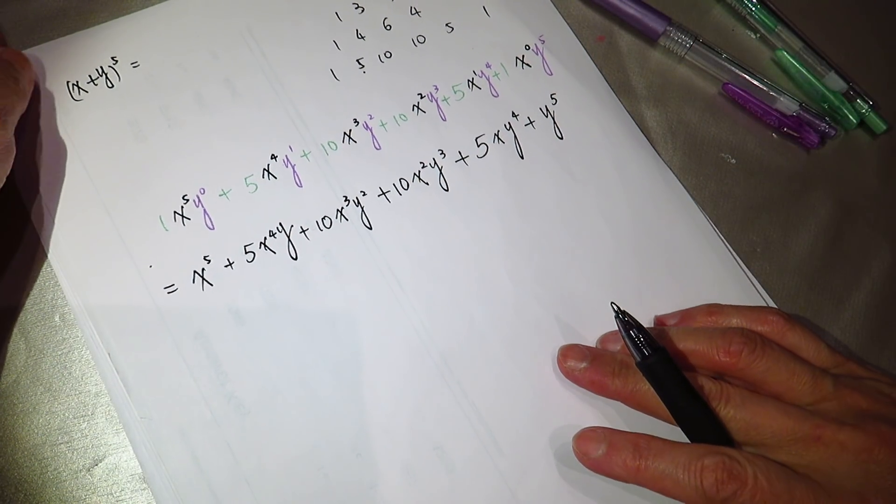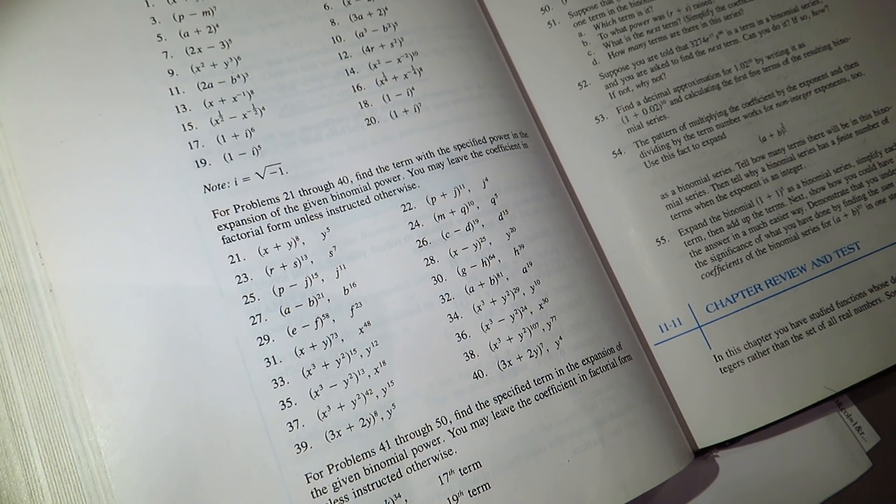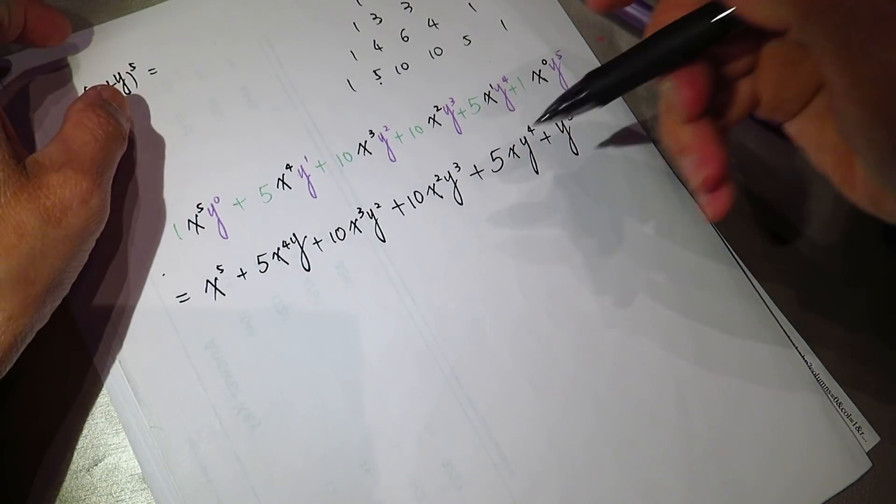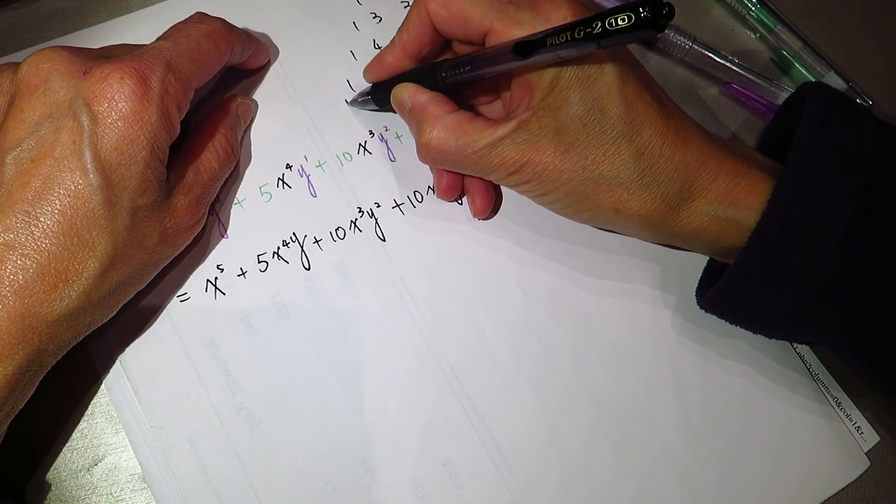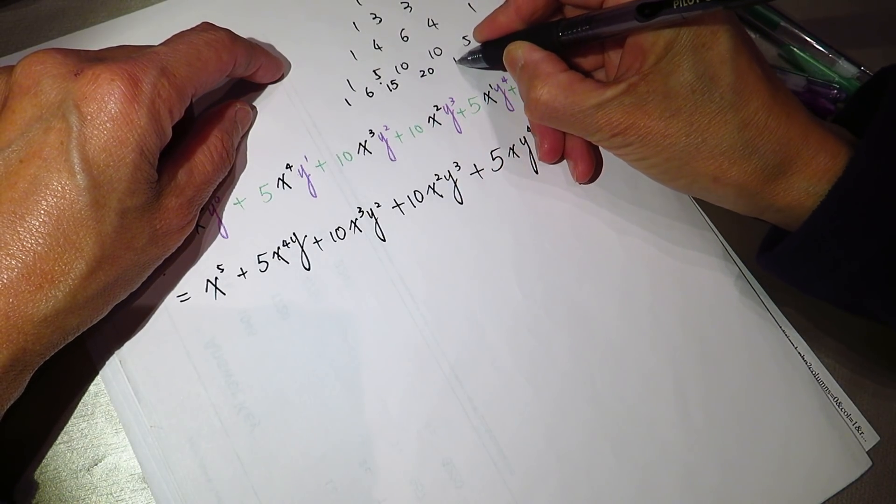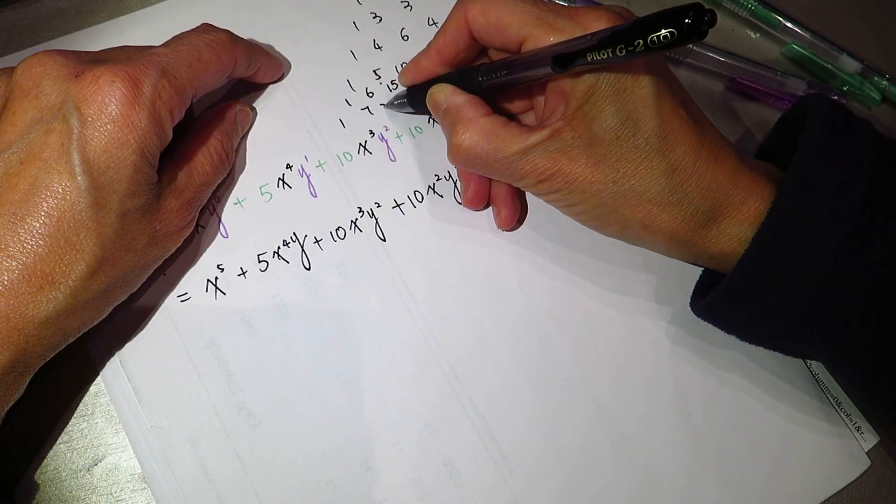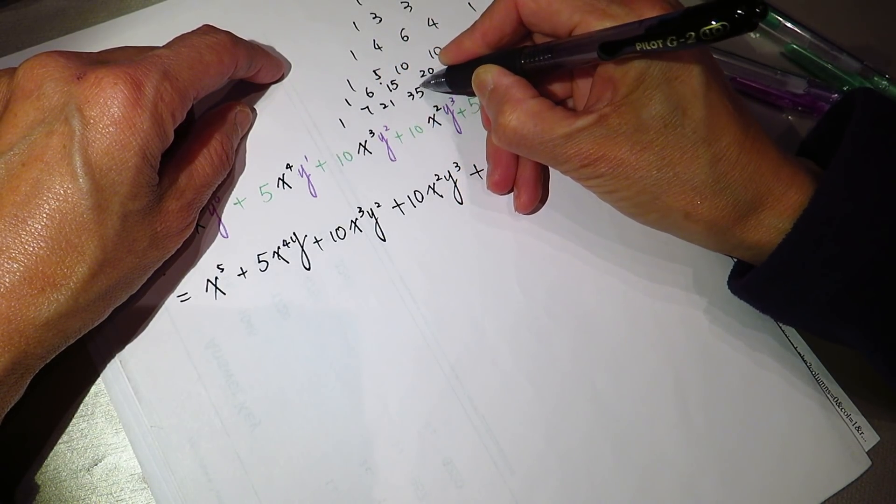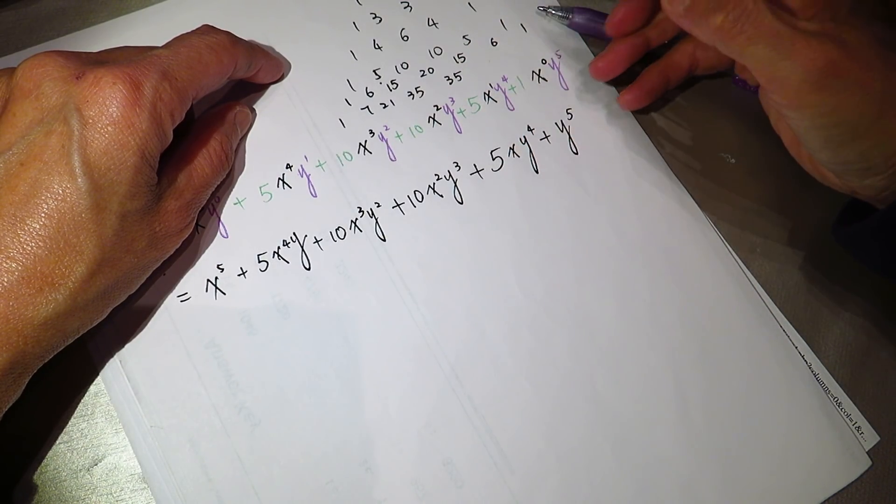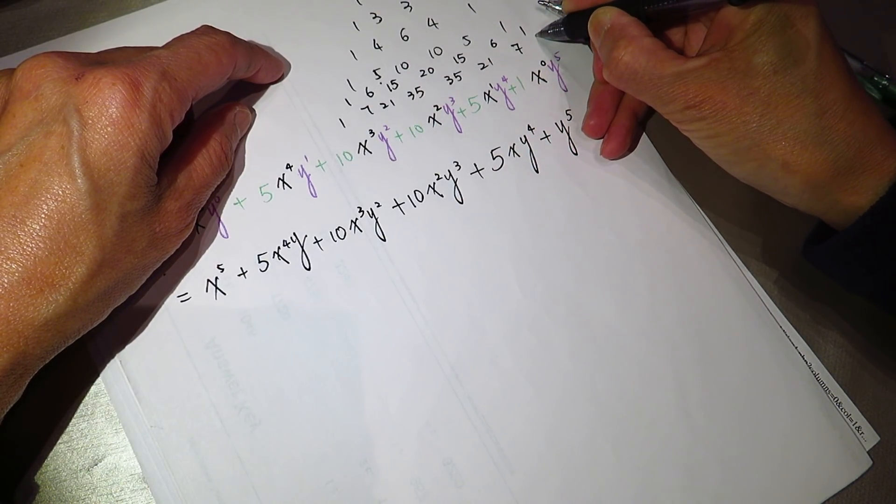Now, we do the second question. P minus M to the power of seven. I will keep on writing until it reach to seven. One, six, 15, 20, 15, six, one, one, seven, 21, 35, 35, 21, seven, one.